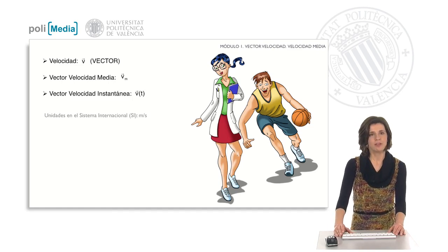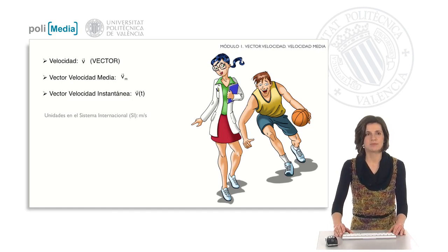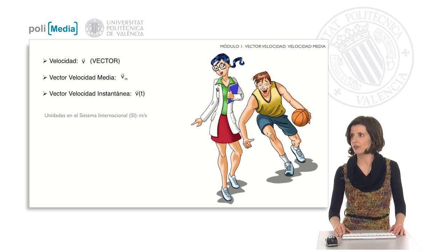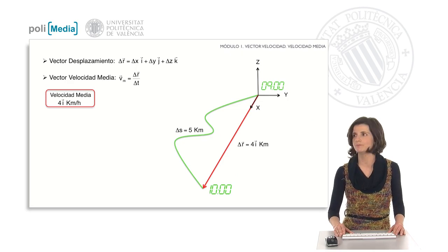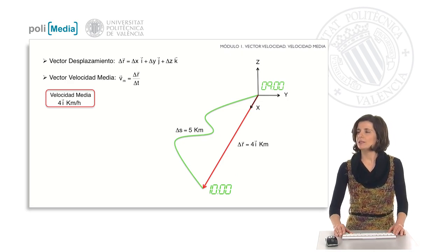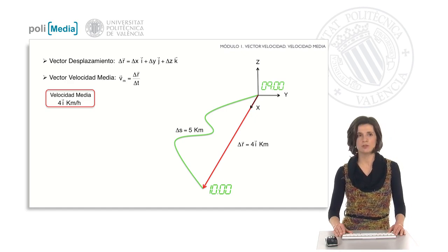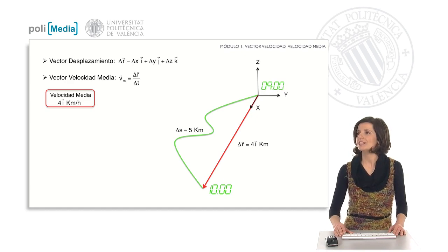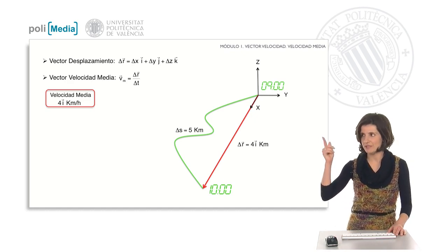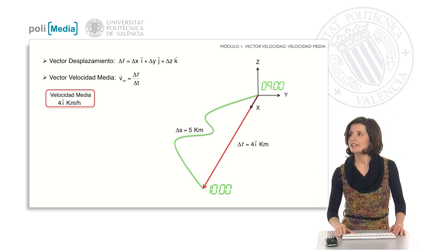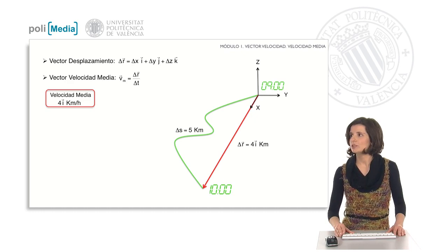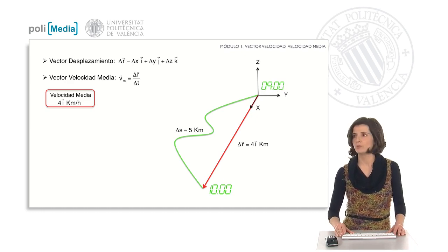In physics the term velocity is reserved for a vector quantity. There are two types of velocity vectors: the average velocity and the instantaneous velocity, and both are measured in meters per second. The average velocity vector is evaluated at an incremental time interval Δt, and it equals the displacement vector divided by Δt — therefore it carries the same direction and sense as the displacement vector. In our case the displacement vector is 4i kilometers and Δt is 1 hour, so the average velocity is 4i kilometers per hour.